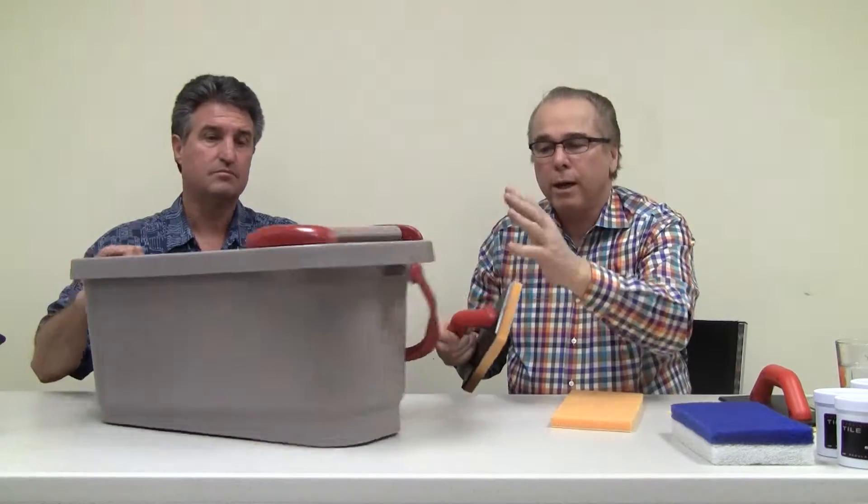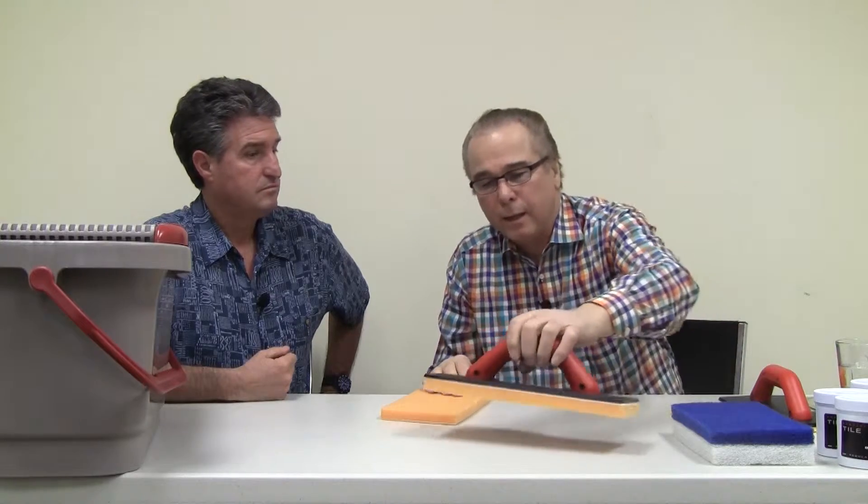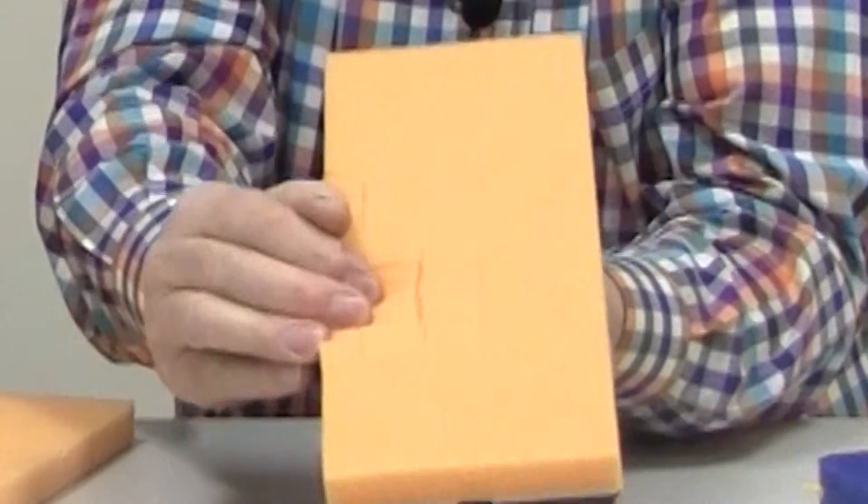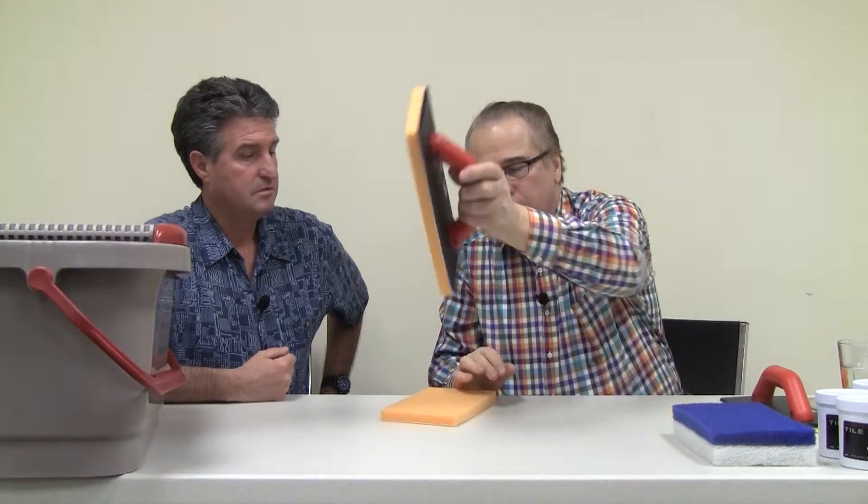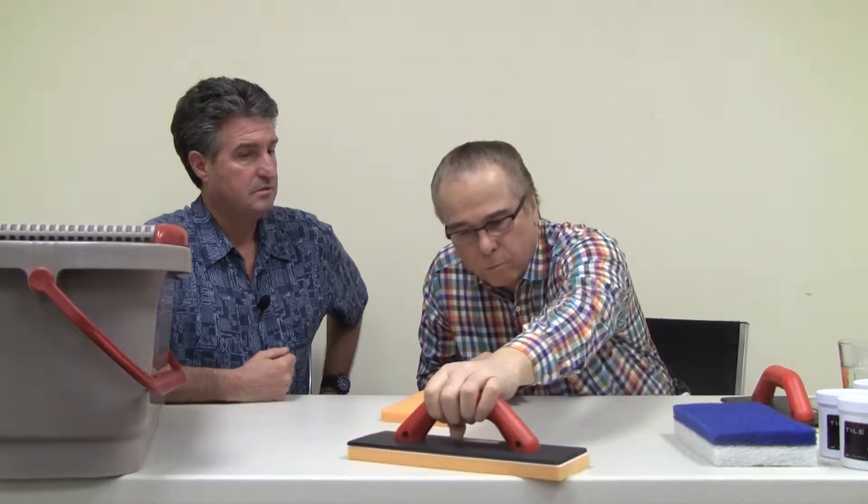This is where the system really shines. After you're through grouting, you change your water and come back. You'll notice the serrations in here. You wet the sponge, roll it, and then pull it diagonally on the tile, and it cleans the tile and the residue.